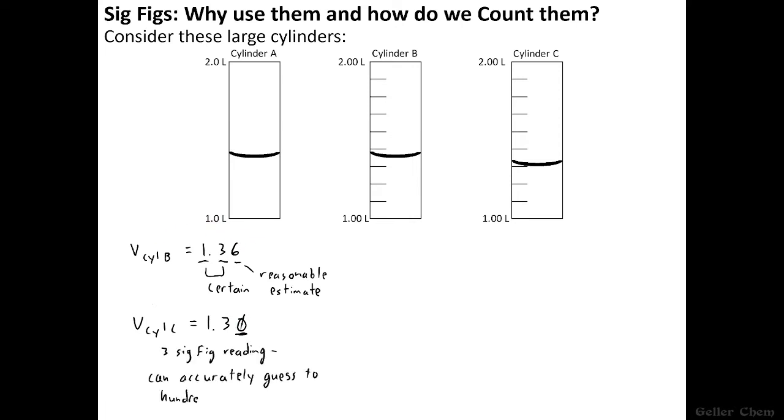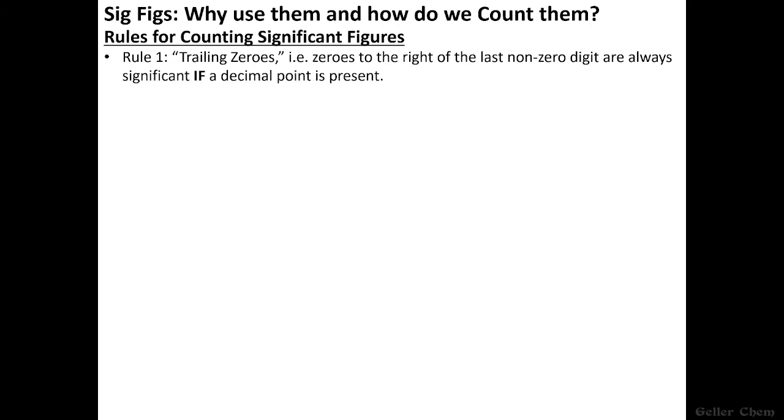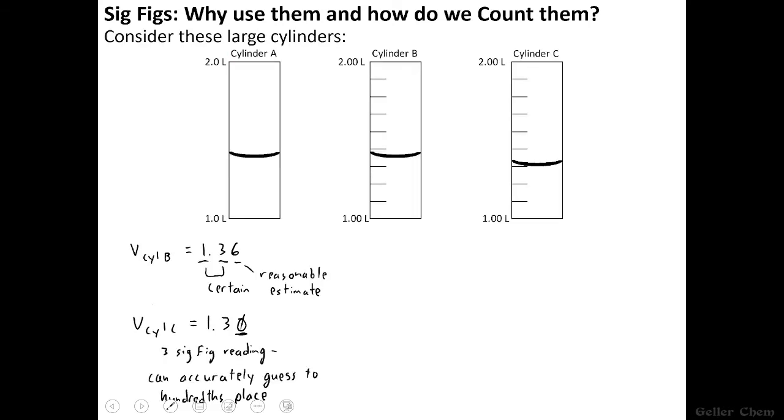And this brings us to our first rule regarding significant figures. Rule 1, regarding trailing zeros as they're called. In other words, zeros to the right of the last non-zero digit. These are always significant if a decimal point is present. So if we just saw a number like 1.500, these would be the trailing zeros because this is our last non-zero digit here.